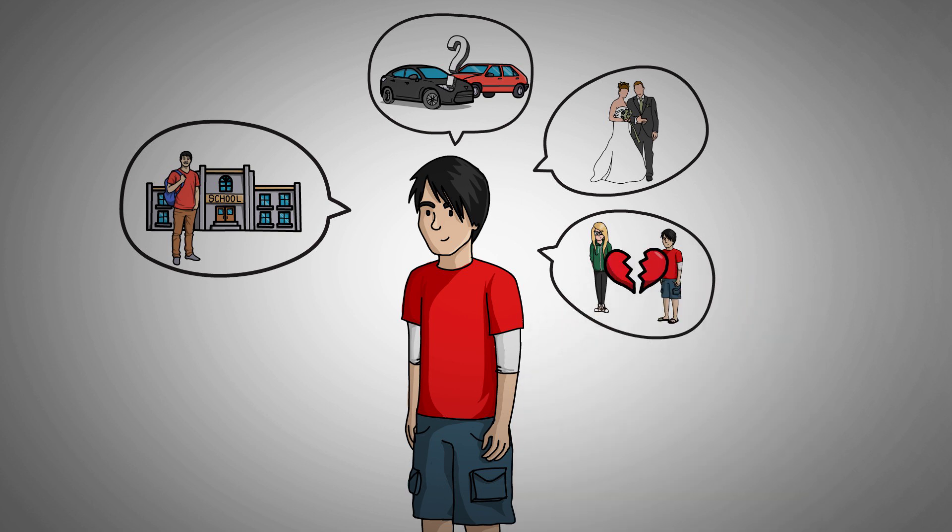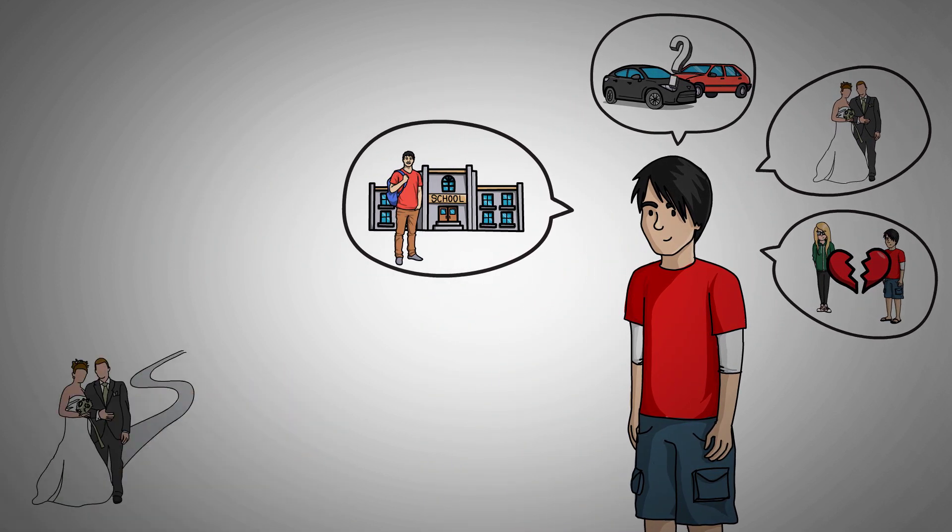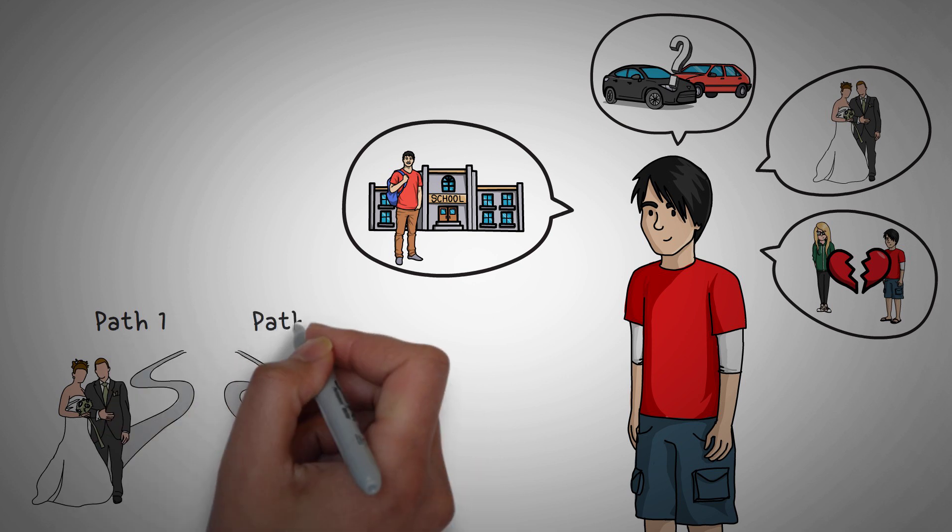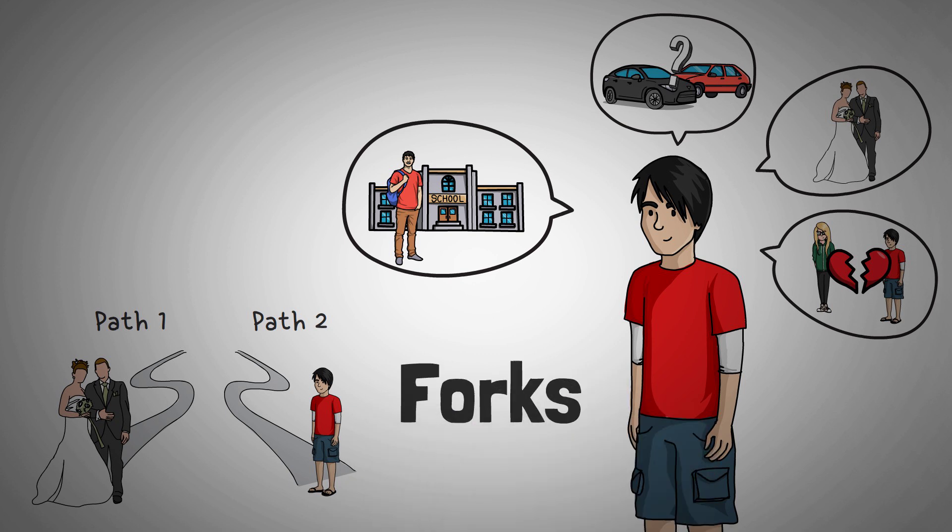These decisions are big because each option we pick could completely change our path of life. If we pick to marry this person, our life could go one way, and if we pick not to marry them, it could go a completely different way. Some would call these decisions forks in our lives, and if you were to zoom out and see all of your decisions, you could see where your life could go a completely different route.